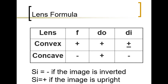The magnification formula is: M equals the height of the image over the height of the object, which also equals negative distance of the image over distance of the object. Sign conventions: for convex lens, focal length is always positive, distance of object is positive, and distance of image is positive if on the other side or negative if on the same side as the object. For concave lens, focal length is negative, distance of object is positive, and distance of image is always negative since the image is always virtual. If the size of the image is negative, the image is inverted and real; if positive, it is upright and virtual.